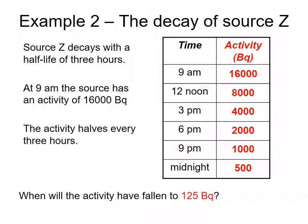So the half, what will the activity have fallen to 125 Becquerels? So you should have calculated it to become 6 a.m. Half, half, half, half.